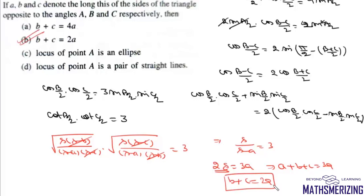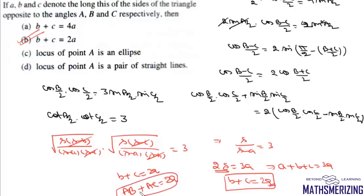Since BC is fixed, side a is constant, and B and C vary such that b + c = 2a. This means AB + AC = 2a = constant. This is the focal property of an ellipse, where PS₁ + PS₂ = 2a. Therefore, the locus of vertex A is an ellipse, which is option C.